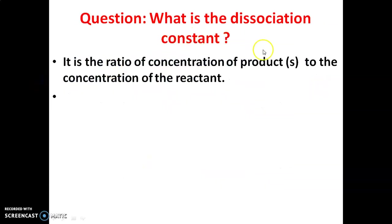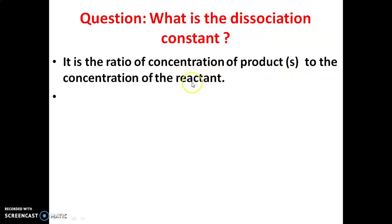What is the dissociation constant? It is the ratio of the concentration of the products to the concentration of the reactant. This ratio is called the dissociation constant, represented by K.